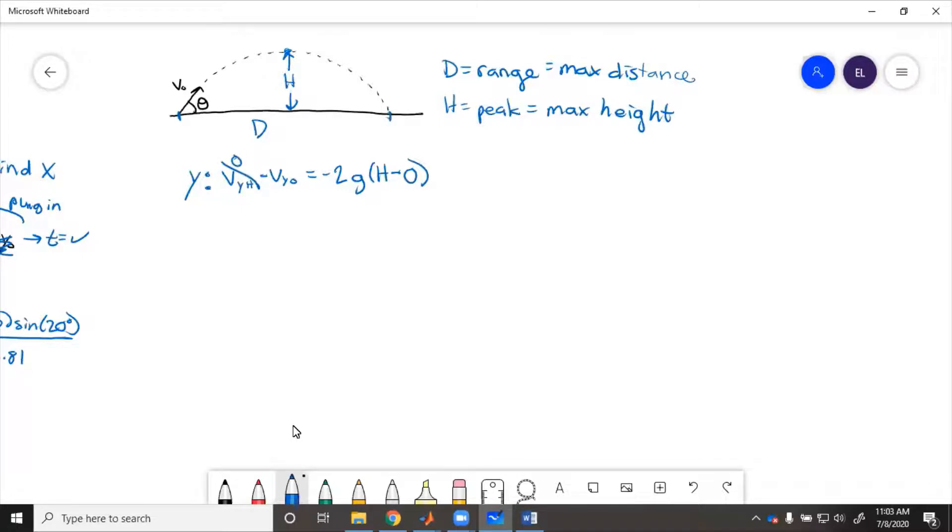And what's the velocity at the bottom? Well, in the y direction it is V initial sine theta equals 2GH. I'm sorry, these should actually be squared. So then if we solve for H, V initial squared sine squared theta over 2G equals H. This is the peak.